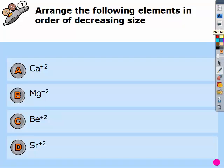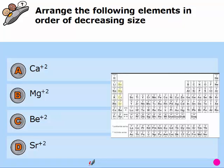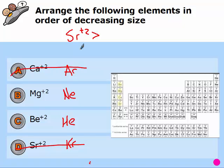Go ahead and arrange the following elements in order of decreasing size. Restart when you have your answer. Beryllium plus two has the same number as helium. Magnesium, neon. Calcium, argon. And strontium, krypton. So first off, these are not isoelectronic. We're just ranking them in order of decreasing size. The biggest one would be strontium plus two, then calcium plus two, magnesium plus two, and finally beryllium.